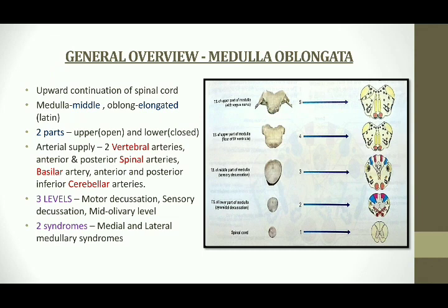It consists of two parts: the upper open part and the lower closed part. It has three levels. From below upwards: the pyramidal or the motor decussation, the sensory decussation, and the upper mid-olivary level.